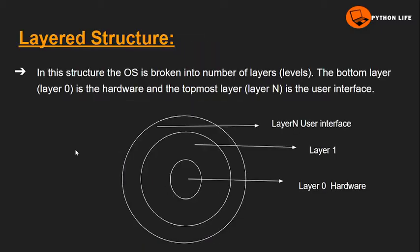The next one is layer structure. In layer structure, the operating system is broken into a number of layers. The bottom layer is the hardware, and the topmost layer is the user interface. We can see this in the diagram — the bottom layer is the hardware and the topmost layer is the user interface.